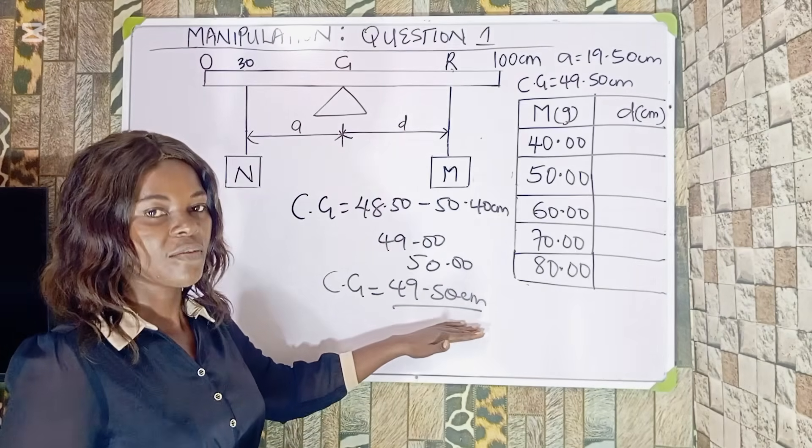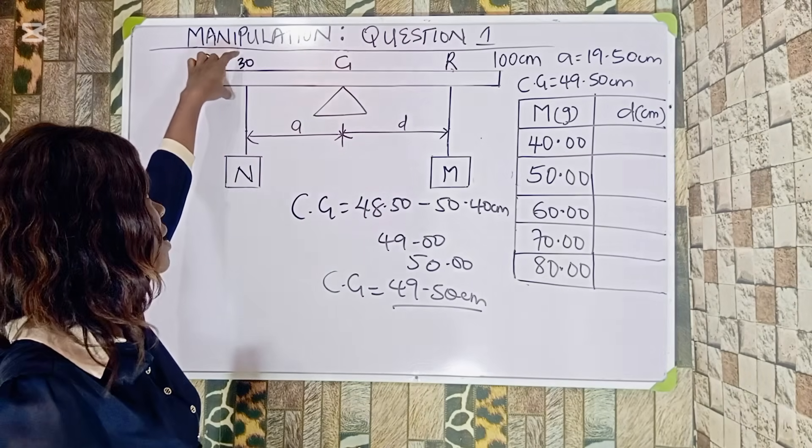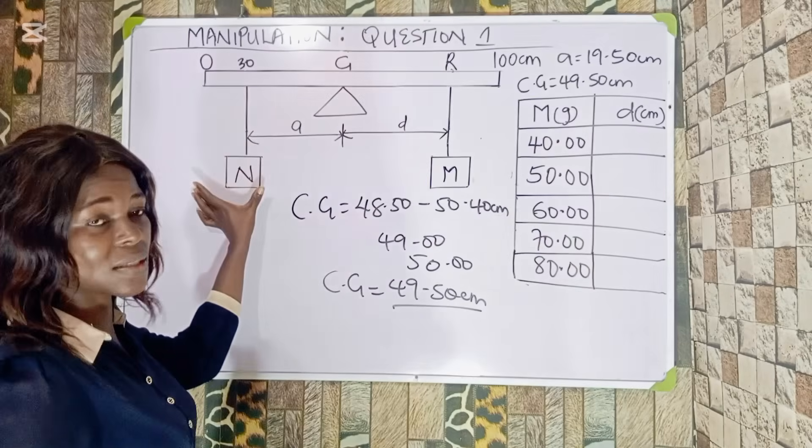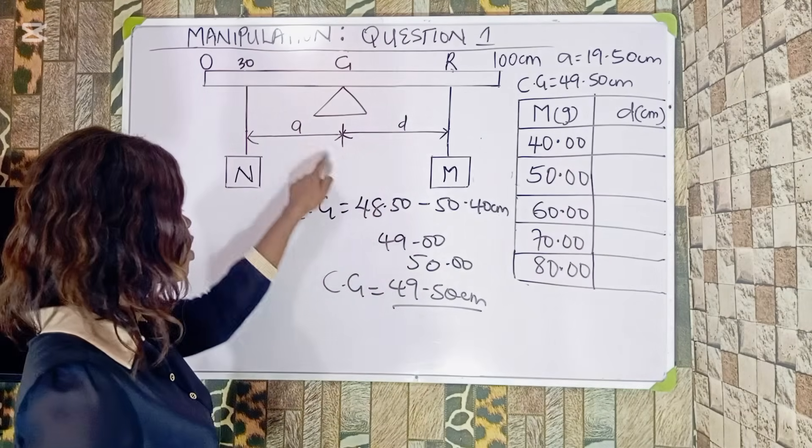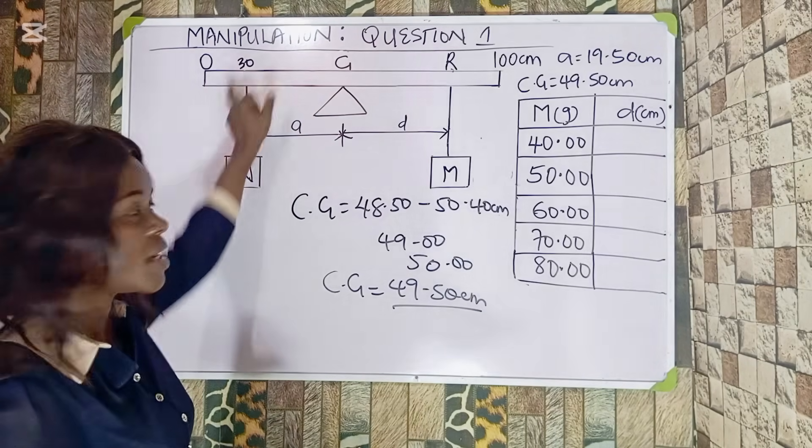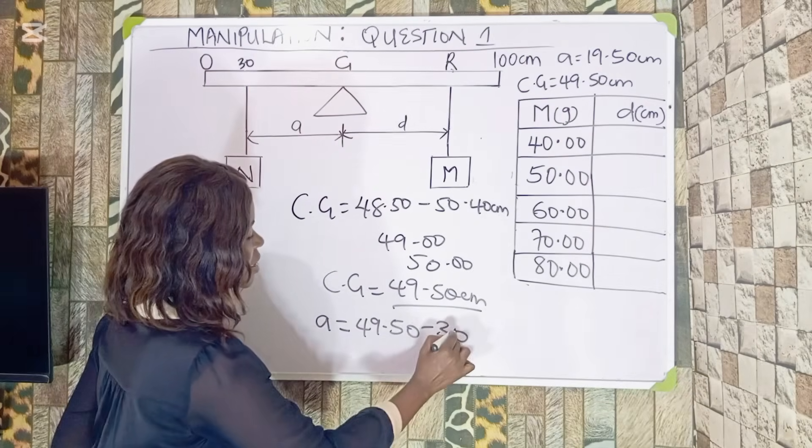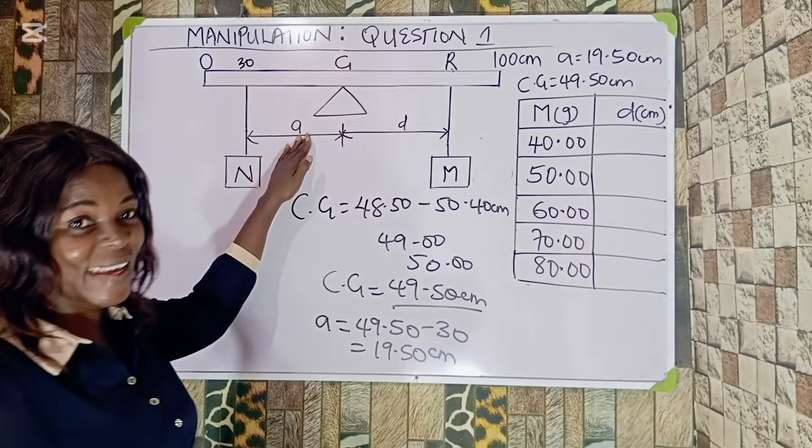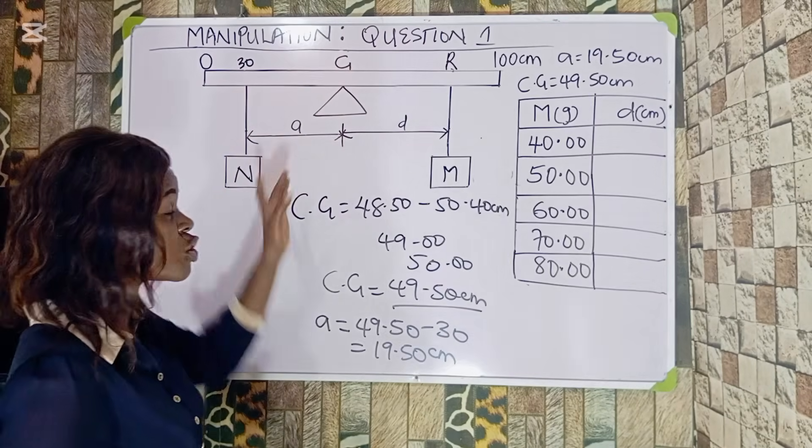Now, using my CG of 49.50 centimeters, the question says we should keep this mass labeled N at a fixed point, which is a distance of 30 centimeters. This distance might differ in your own case, but just understand the concept I'm trying to put out. If this is kept constant and you already know your CG, remember I am using 49.50, so I already know the distance which is A. What is that A? A simply means the CG minus the 30.